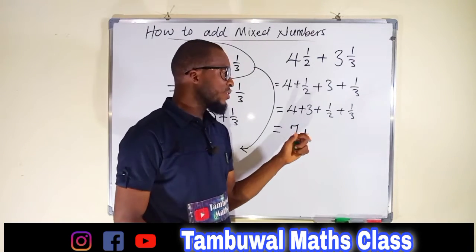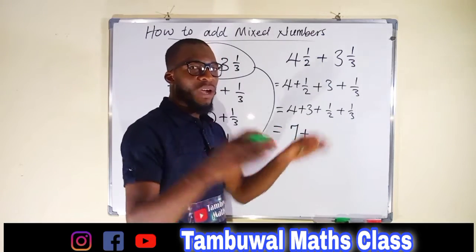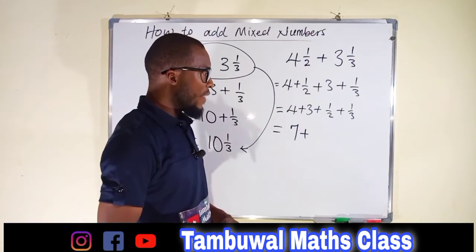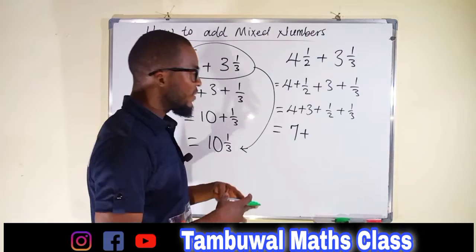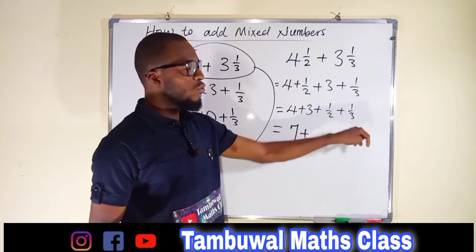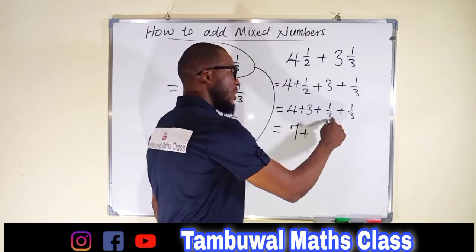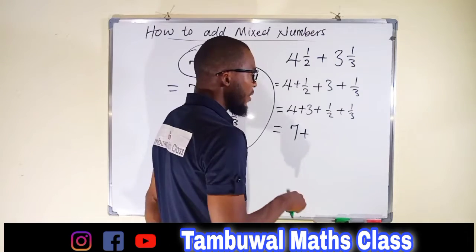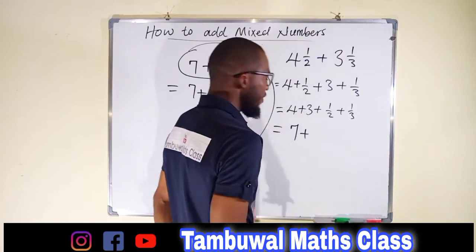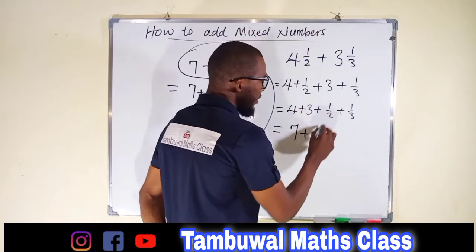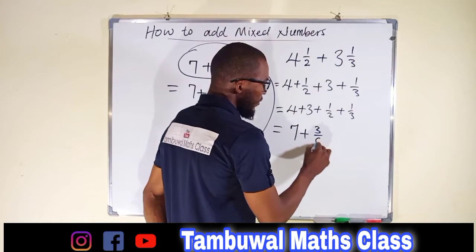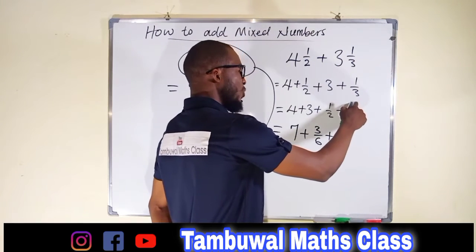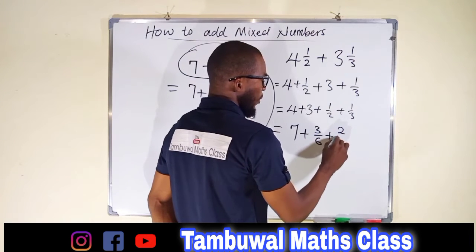When adding two or more fractions with the same denominator, you are free to add their numerators together. But these two fractions have different denominators, so you have to transform them to have the same denominator. The LCM between 2 and 3 is 6, so we are going to transform each fraction into sixths. To transform 1 over 2 into sixths, multiply both numerator and denominator by 3: that gives 3 over 6. To transform 1 over 3 into sixths, multiply both by 2: that gives 2 over 6.